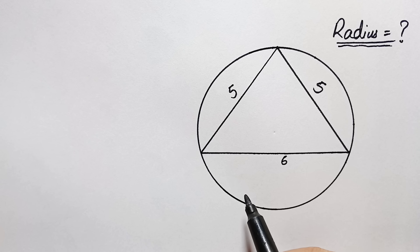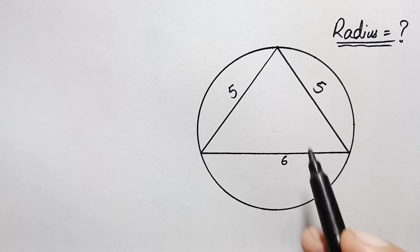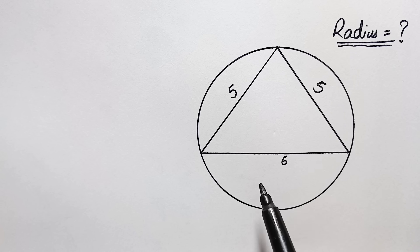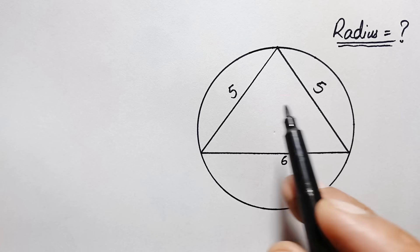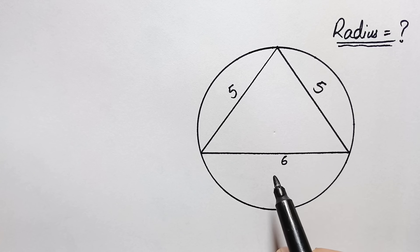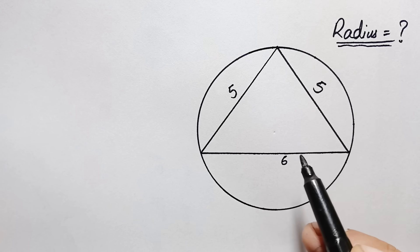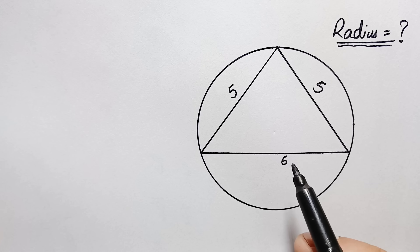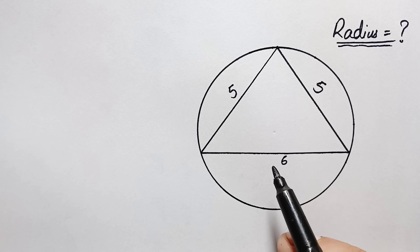Hello everyone, you are welcome. Today we have a new beautiful geometry math problem. We are given a circle with a triangle inside it. Two sides of the triangle are equal, each five units, and the third side is different. We have to find out the radius of this circle. There are different methods to solve this problem, but here we will use one of the easiest methods.